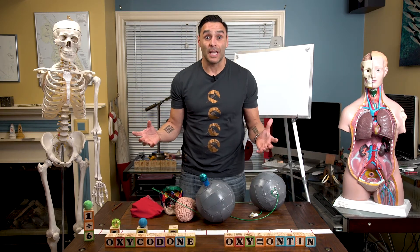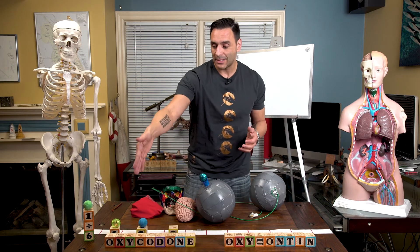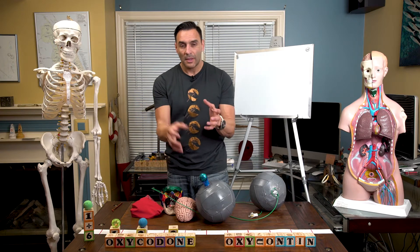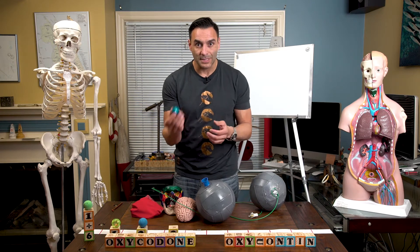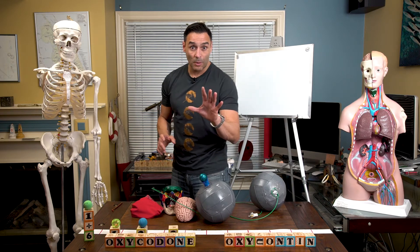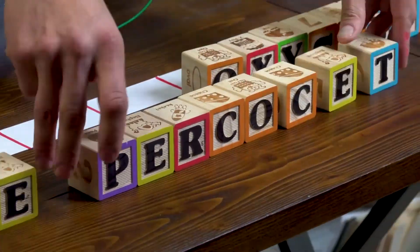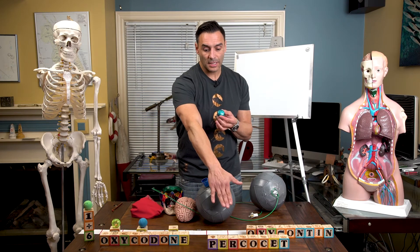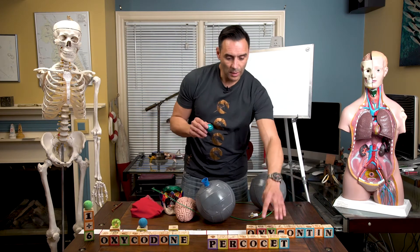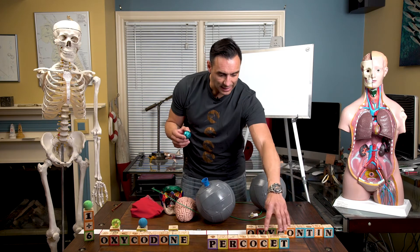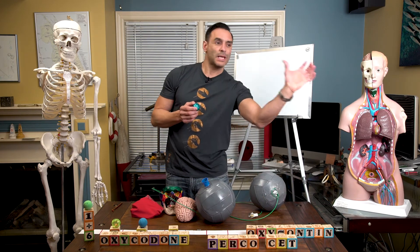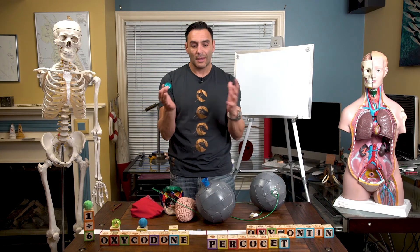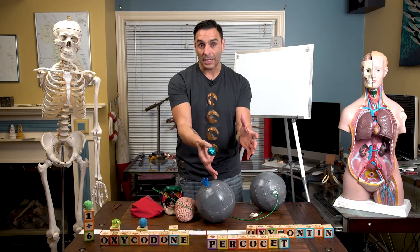Have you heard of Percocet? Percocet contains oxycodone plus acetaminophen — it's a combination painkiller. The opioid in Percocet is oxycodone. It has two drugs in it: oxycodone and acetaminophen. The name 'Percocet' is a marketing name — the '-cet' part is taken from acetaminophen.